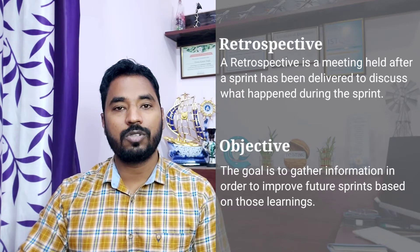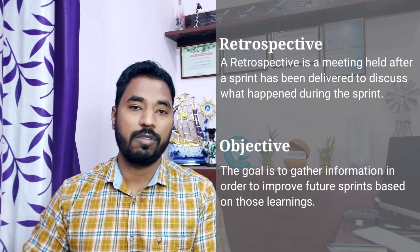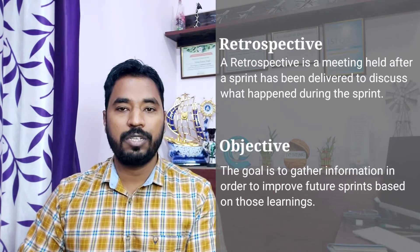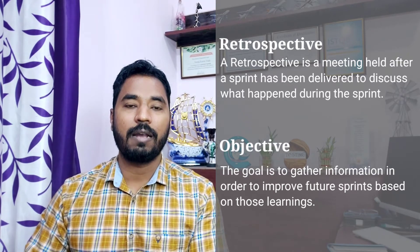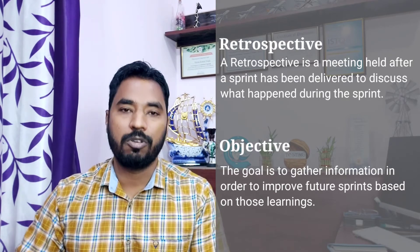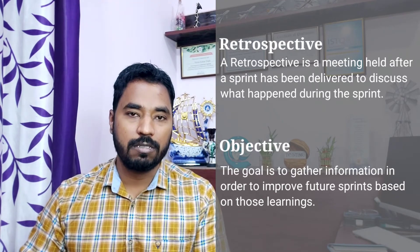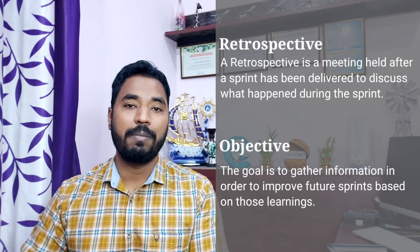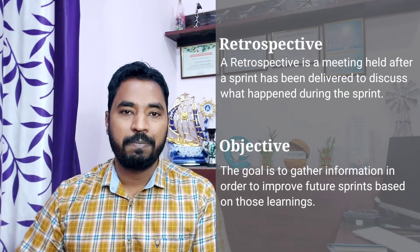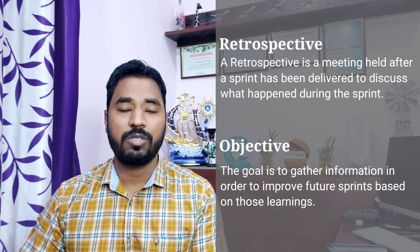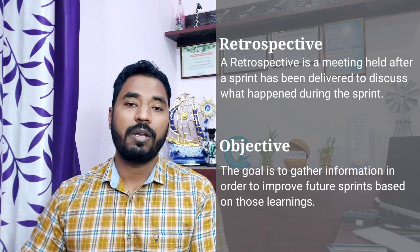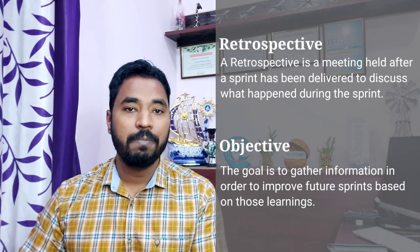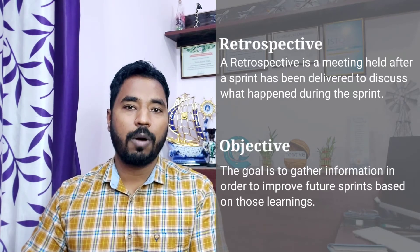In traditional approaches, this retrospective happens once at the end of the project, but in agile it happens at the end of each sprint. So every sprint you complete, you will have a retrospective to see what exactly went through that particular sprint. This is mainly to gather lessons learned from each sprint in order to improvise and optimize your upcoming sprints in a better way. That's what retrospective is — it helps not only individuals but the organization as well to add more value and be more optimized.